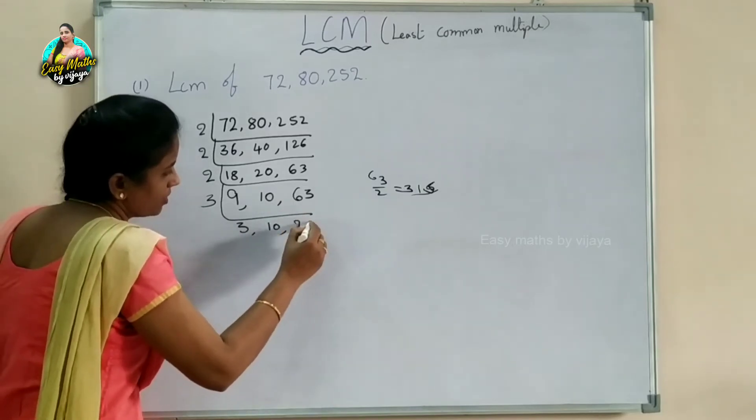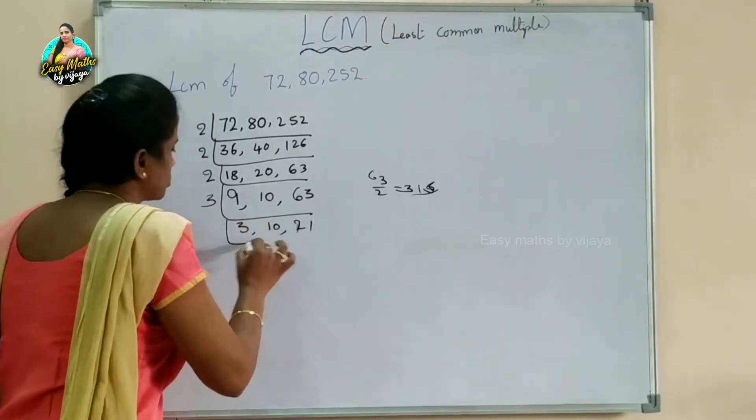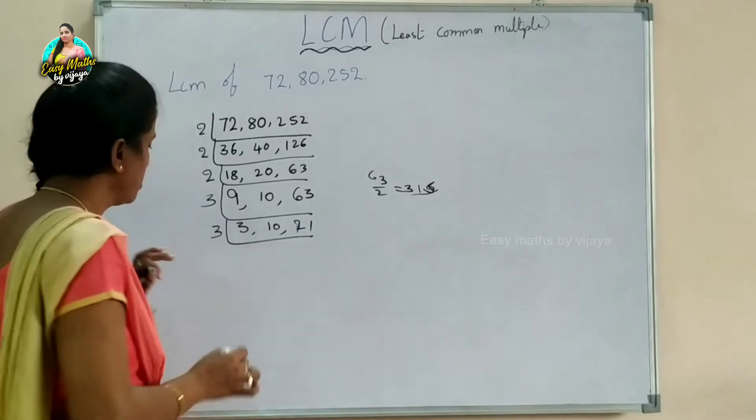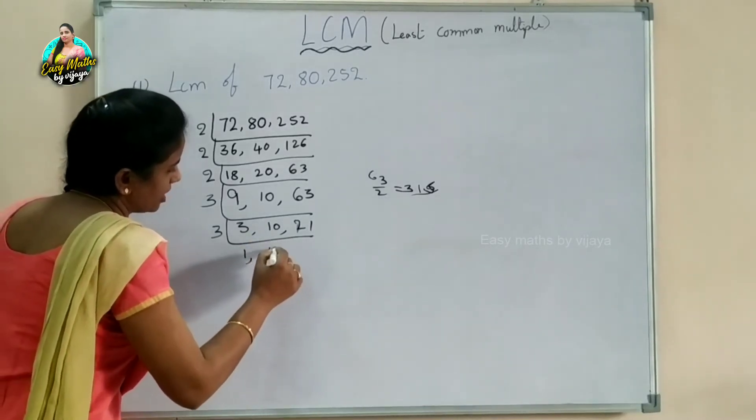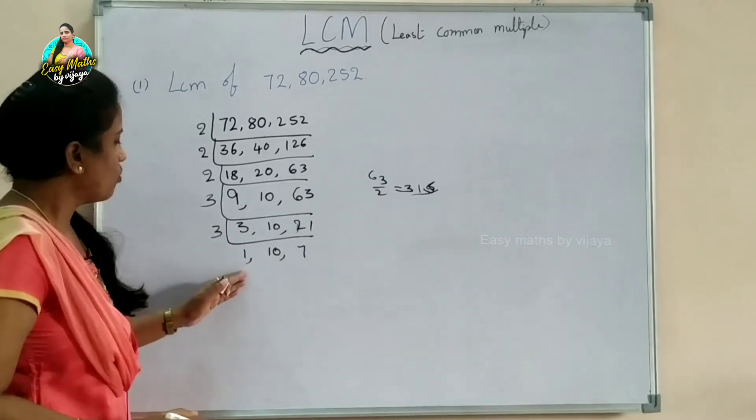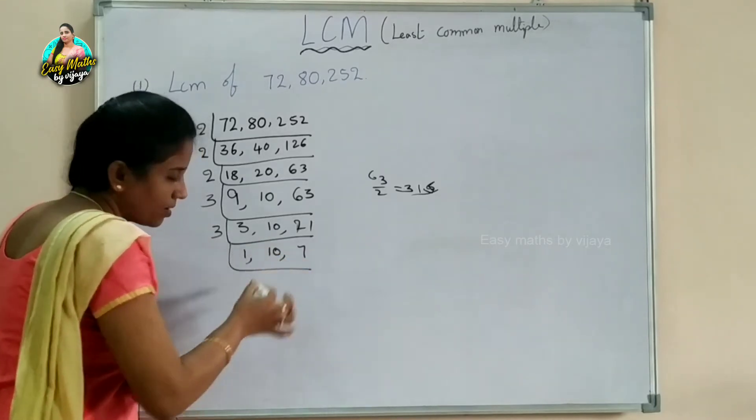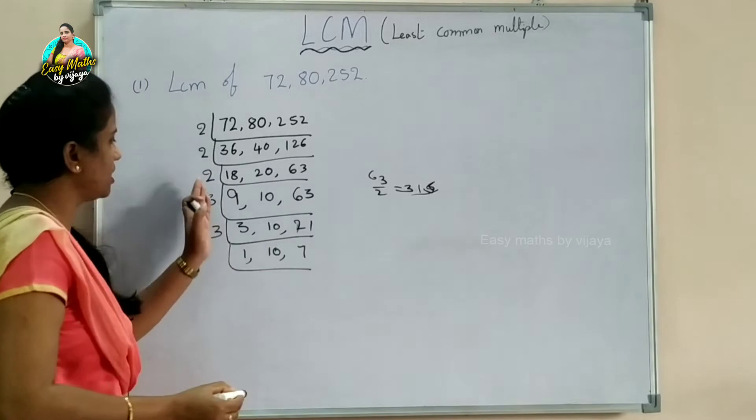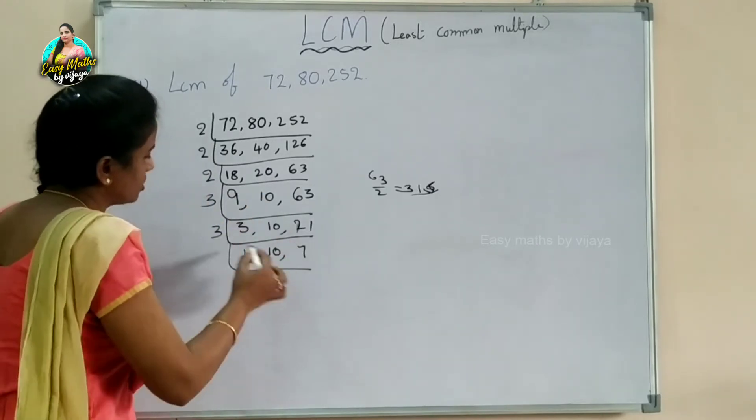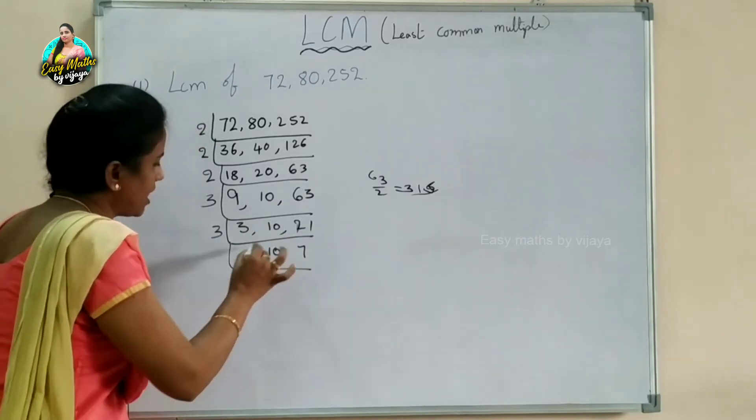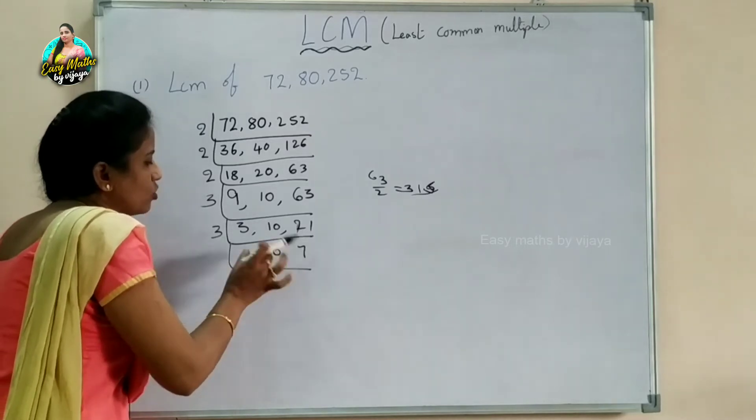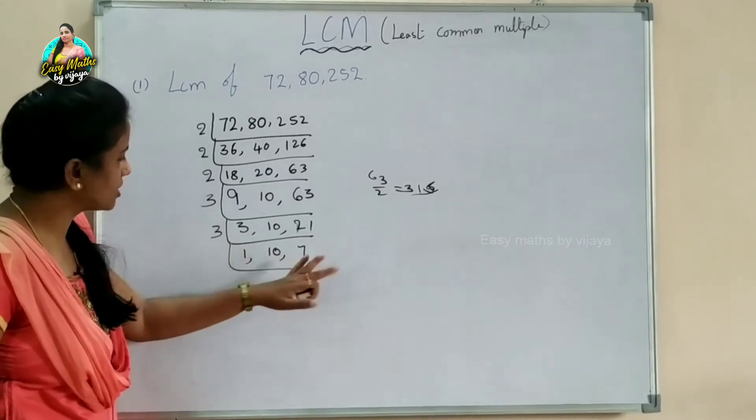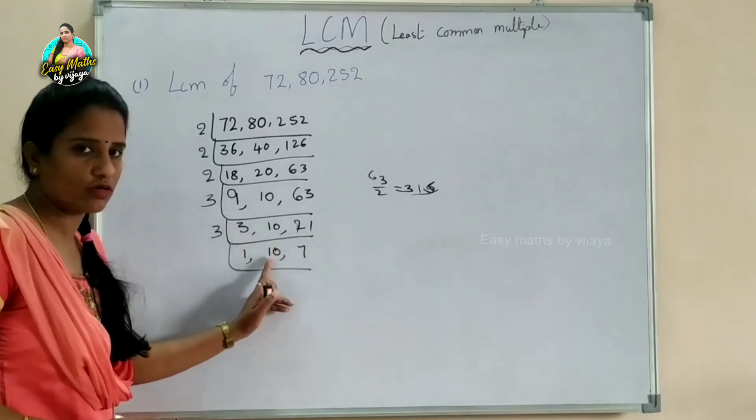3 divides 9 to get 3, 10 stays as 10, and 63 divides to get 21. Next, 3 divides 3 to get 1, 10 stays as 10, and 21 divides to get 7. Now we have 1, 10, and 7. You can divide these by any common factors.